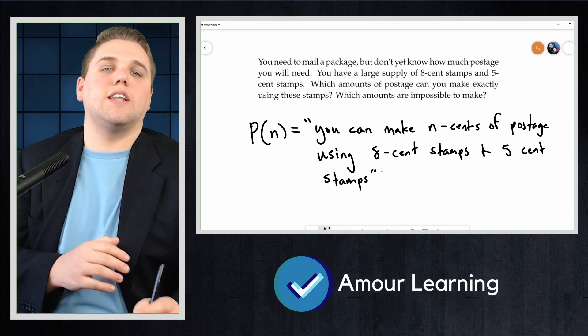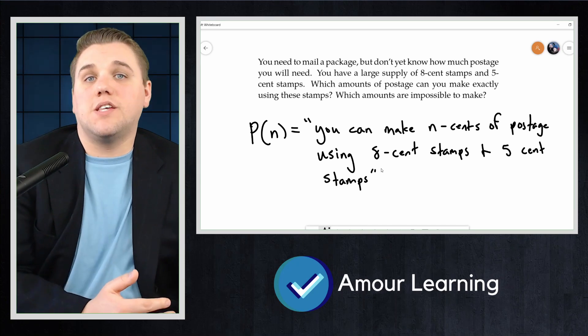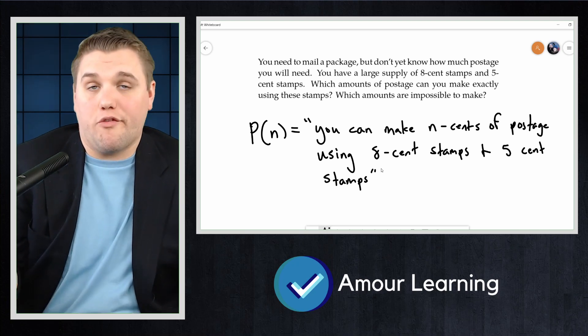So P(n) is going to represent the truth value of this statement. Since for each value of n, P(n) is a statement, it is either true or false.